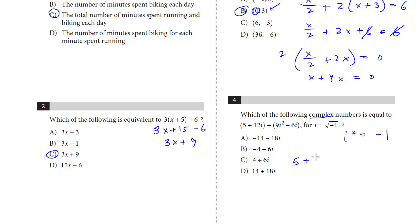So let's multiply this out. We get 5 plus 12i, minus 9i squared. And here we have minus a minus, so that's going to be plus 6i. So here's what I was mentioning earlier. i squared, whenever you see an i squared, plug in negative 1.